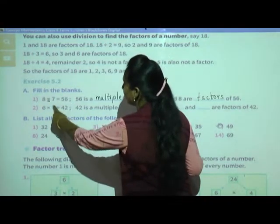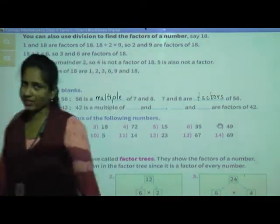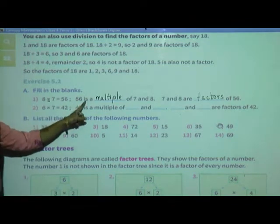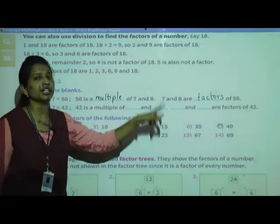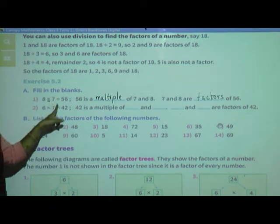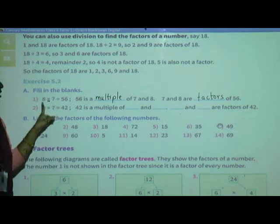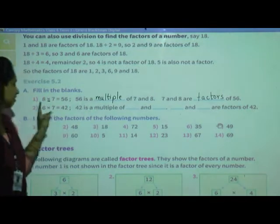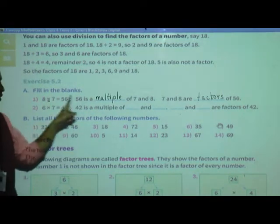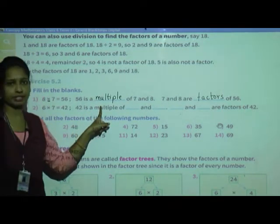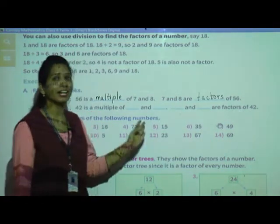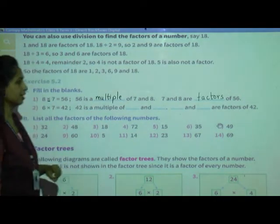Let me repeat: 8 multiplied by 7 equals 56. In the fill in the blanks: 56 is a multiple of 7 and 8 — because the multiplication symbol is there. And 7 and 8 are factors of 56.